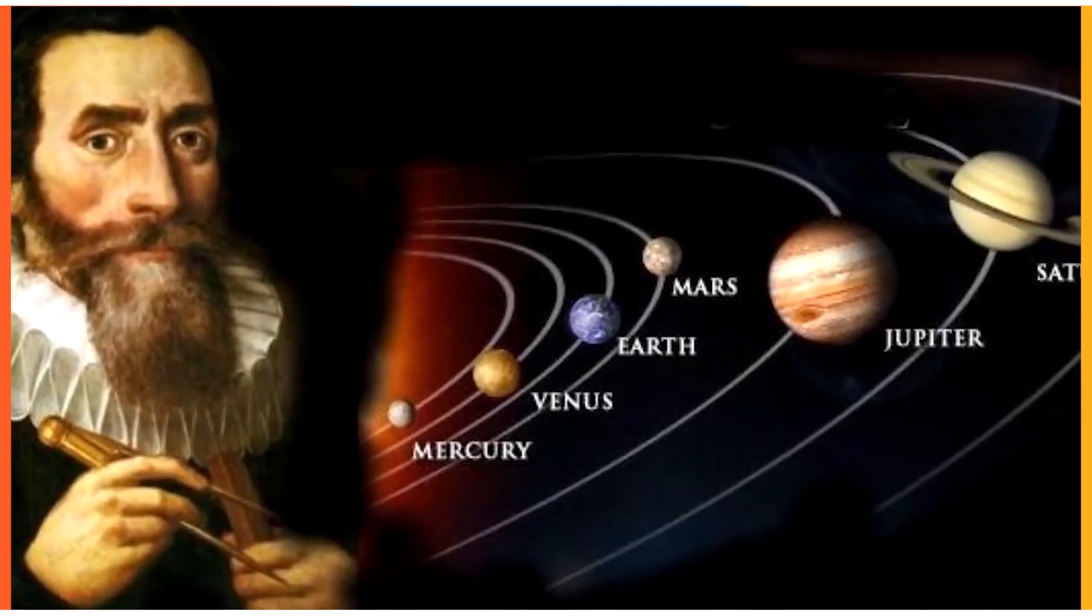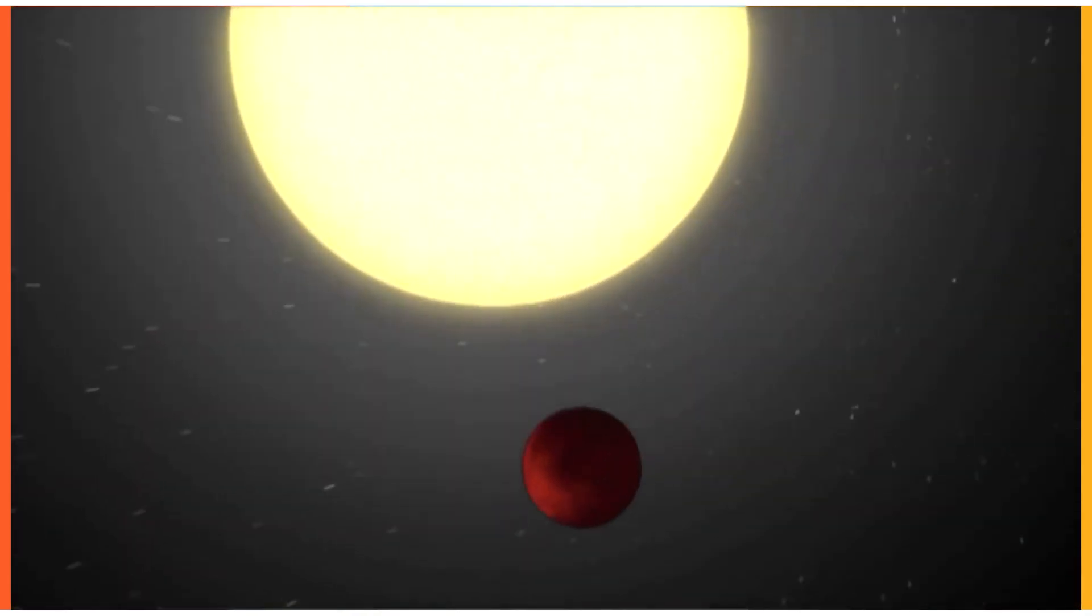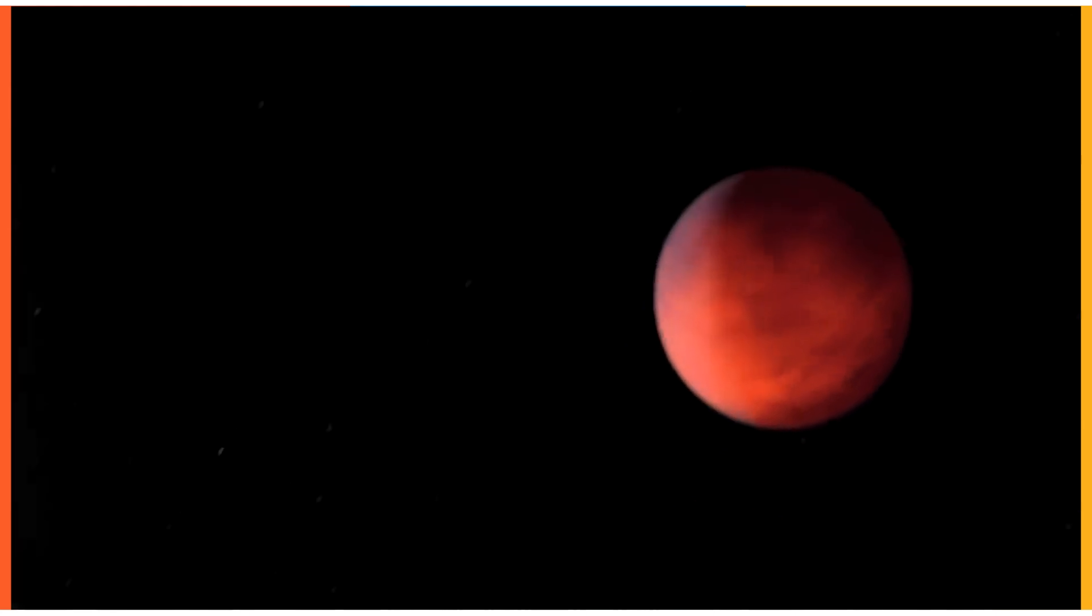Kepler's third law, named after the scientist Johann Kepler, states that you can determine a planet's average distance from its parent star, assuming you know the length of its year and the mass of the star.